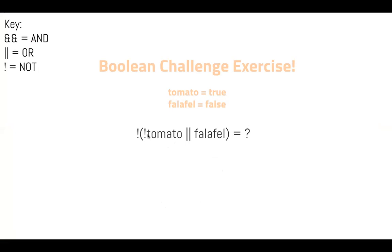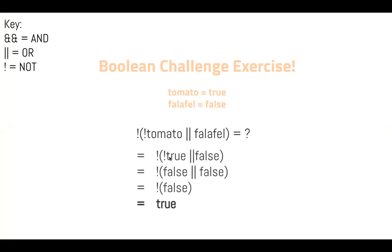Let's try 'not of (not tomato OR falafel).' Tomato is true, falafel is false. Substituting: 'not (not true OR false).' Not true is false, so it becomes 'not (false OR false),' which is 'not false,' which equals true. The tomato-falafel sandwich analogy only gets us so far at this level of complexity, but believe it or not this can be really useful.